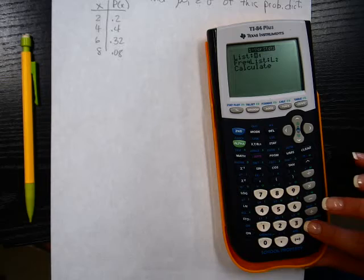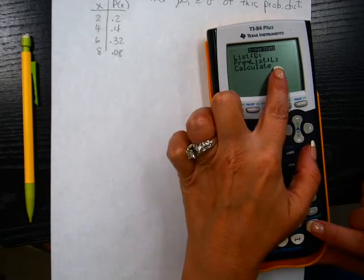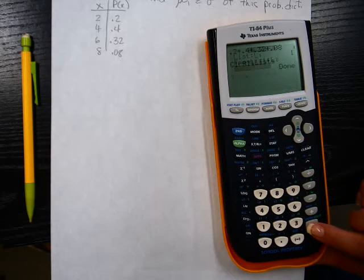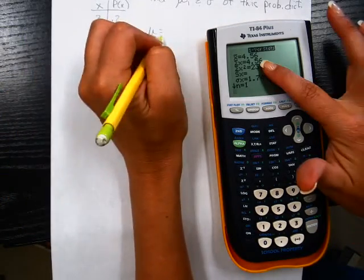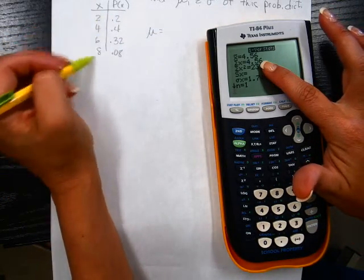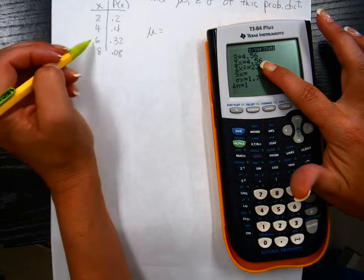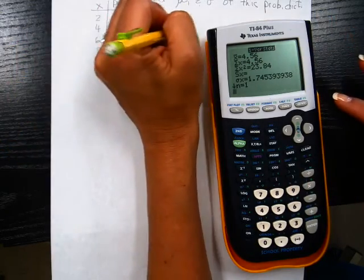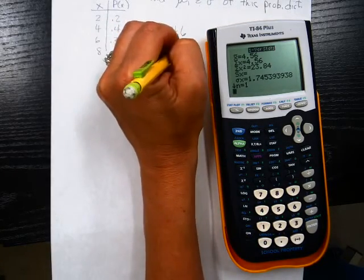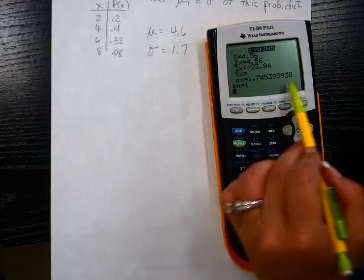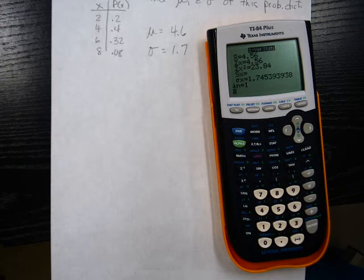Then stat, calculate, one more stat. Make sure you have list 1 and list 2 and calculate. My mean is my first thing. All these have no decimals. So my mean is going to be 4.6. My standard deviation is 1.7 right here.